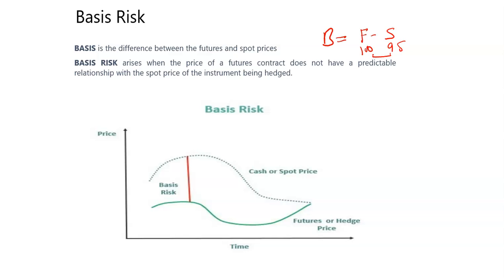What is Basis Risk? Basis Risk arises when the price of a future contract does not have a predictable relation with the spot price of the instrument being hedged. For example, if you are buying a future at $200 but the spot price is $210, the difference between these two is called the basis.